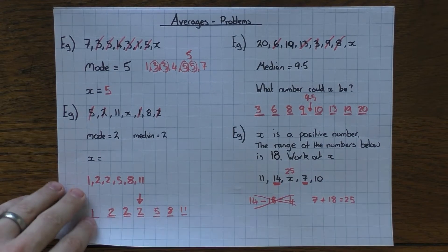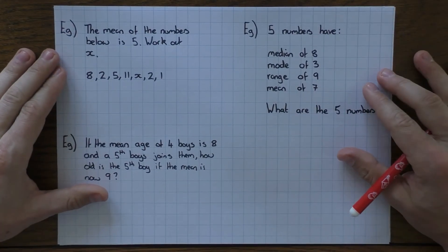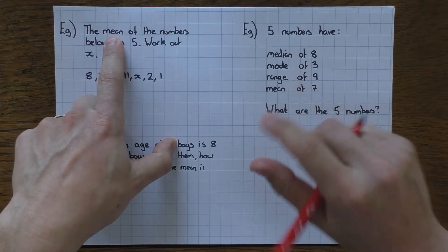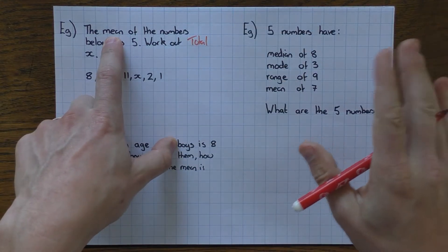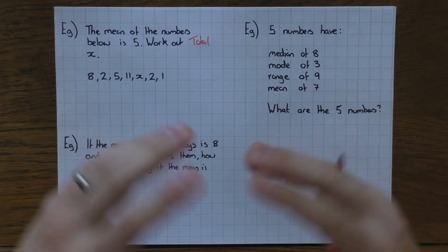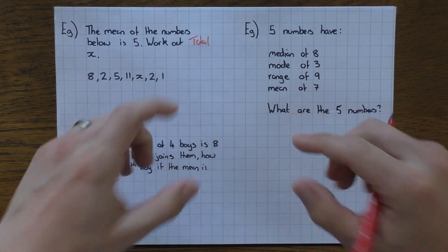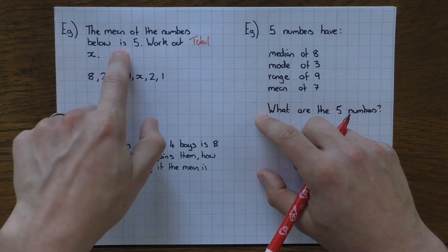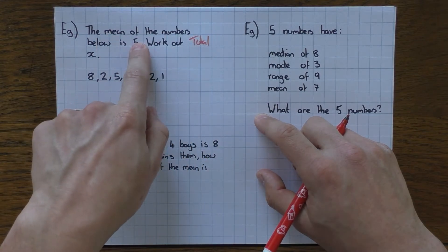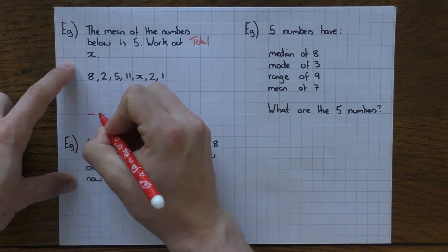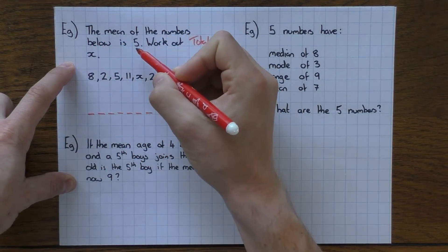Now let's look at some slightly trickier ones to do with means. Whenever you are told the mean of a set of numbers, you must work out the total — every single time. It will usually make the question so much easier. Even if you don't know how to answer the question, just by working out the total it usually reveals itself. We're told the mean of the numbers below is 5; work out x.